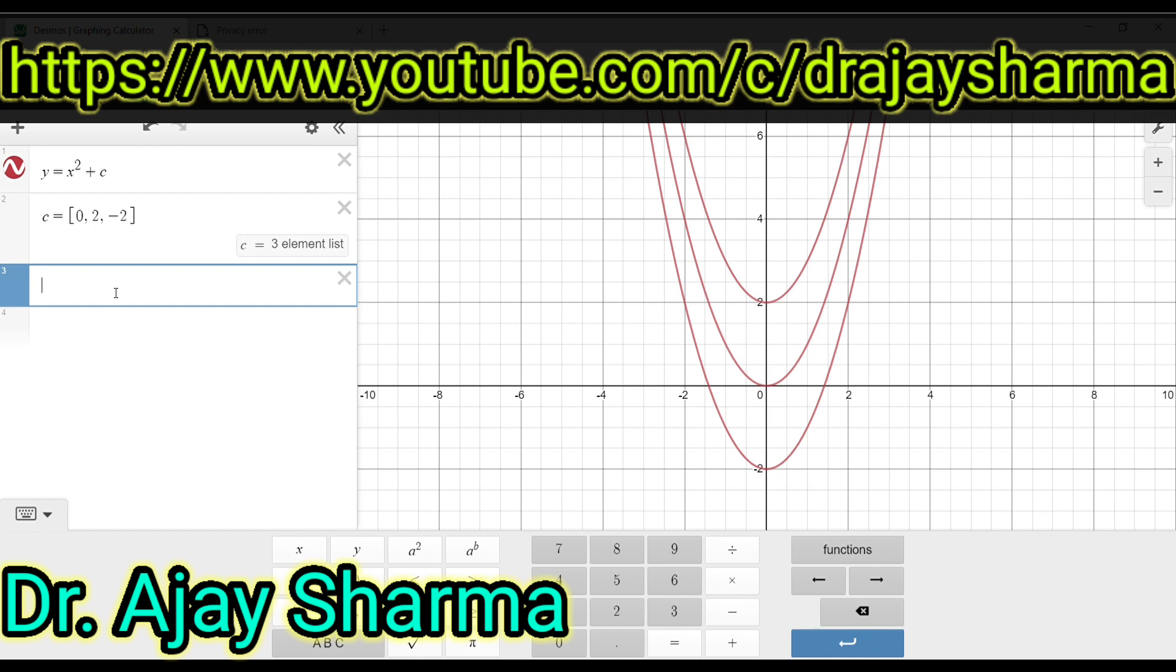This constant can be positive, it can be 0, it can be negative. So it means this can achieve any real number value. So y is equal to x square plus c is actually the anti-derivative of the function y is equal to 2x.